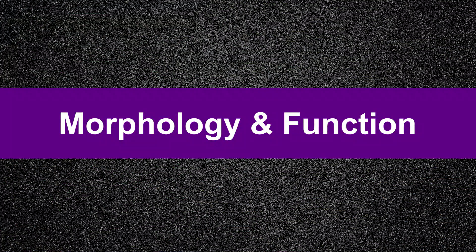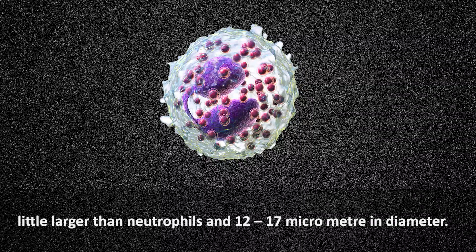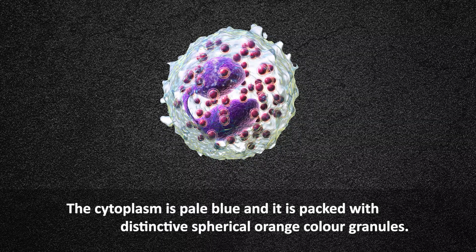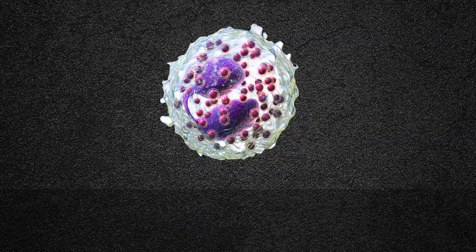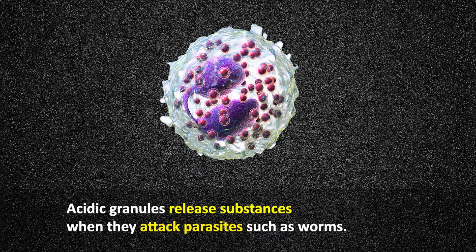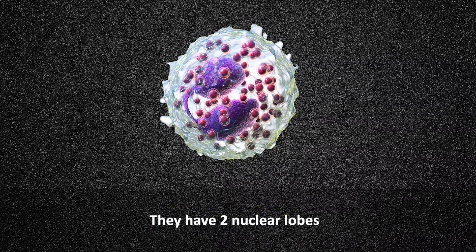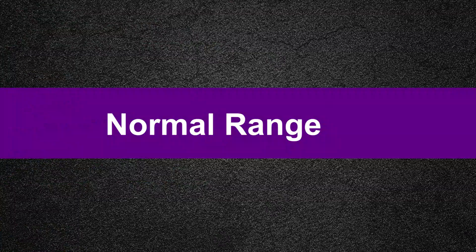Regarding morphology and function: they are a little larger than neutrophils, at 12 to 17 micrometers in diameter. The cytoplasm is pale blue and it is packed with distinctive spherical orange-colored granules. These acidic granules release substances when they attack parasites such as worms, and they also have two nuclear lobes.